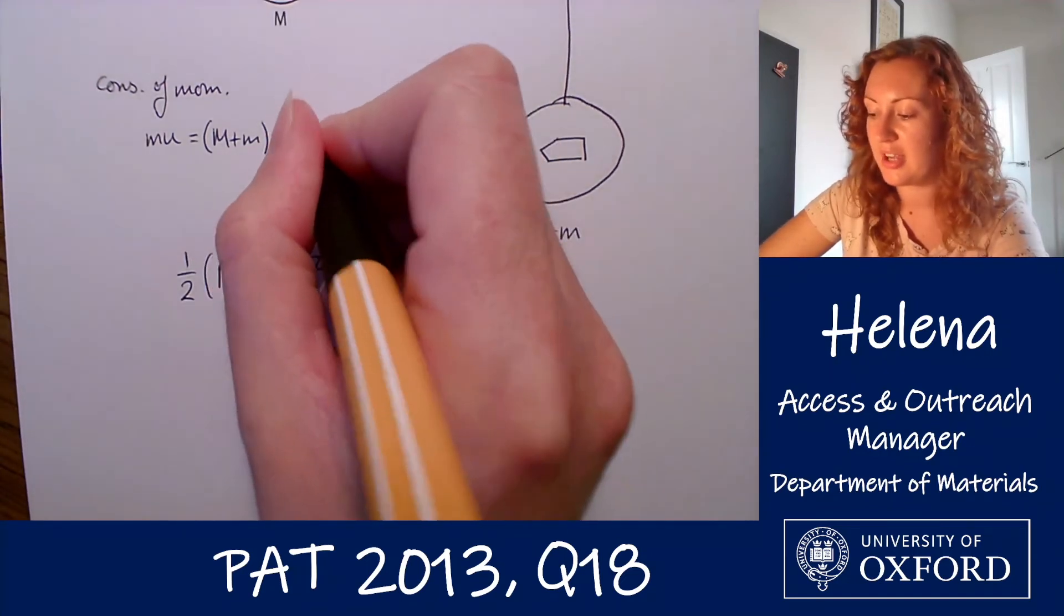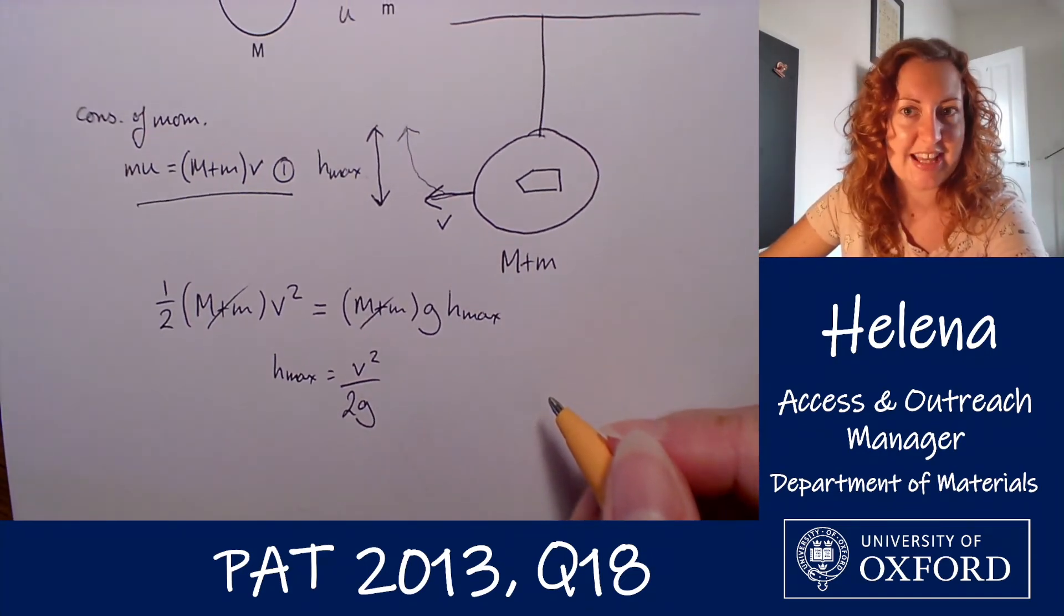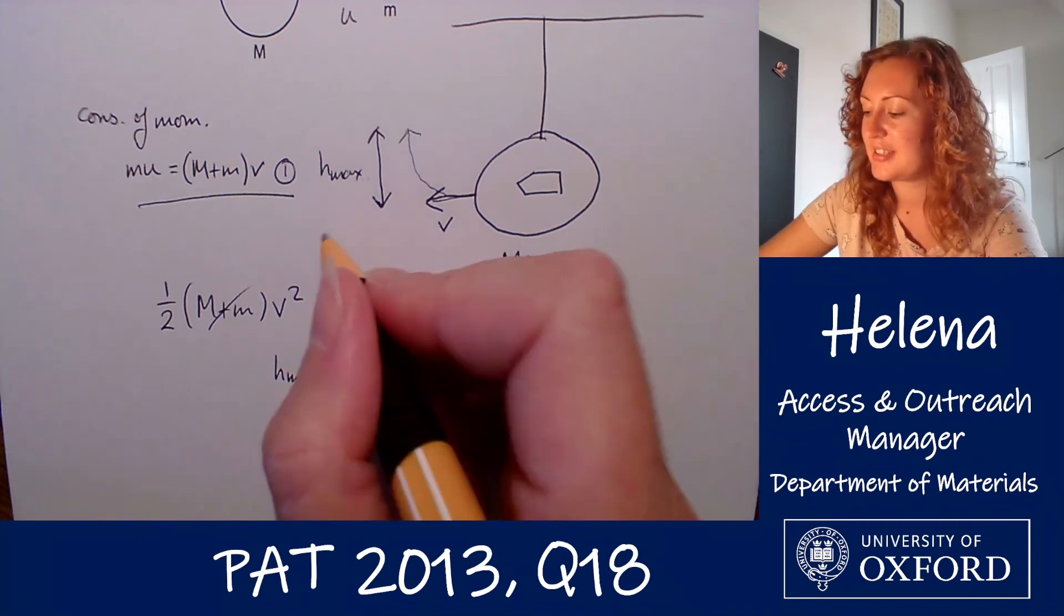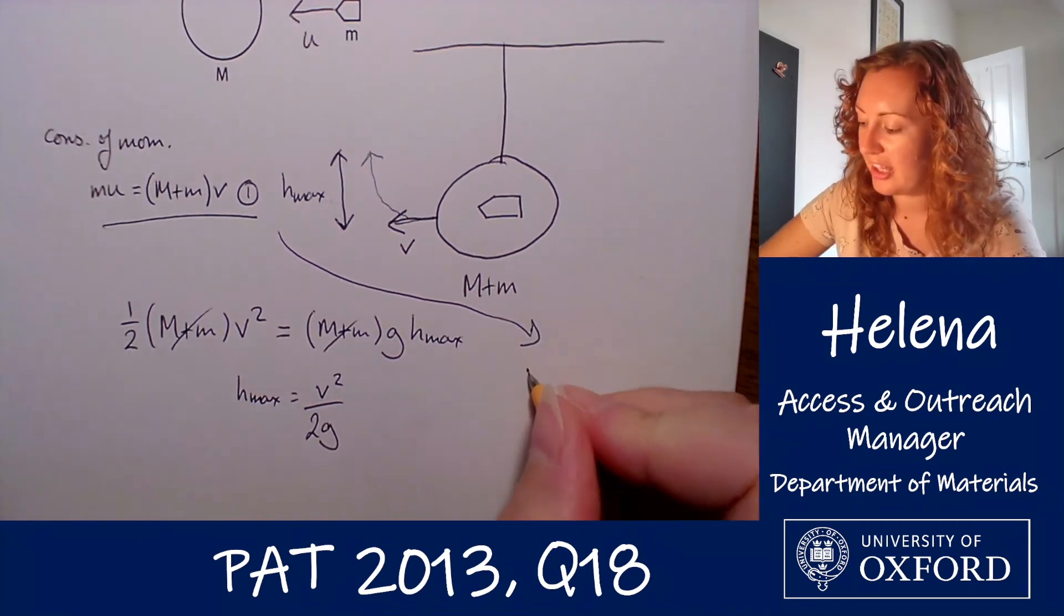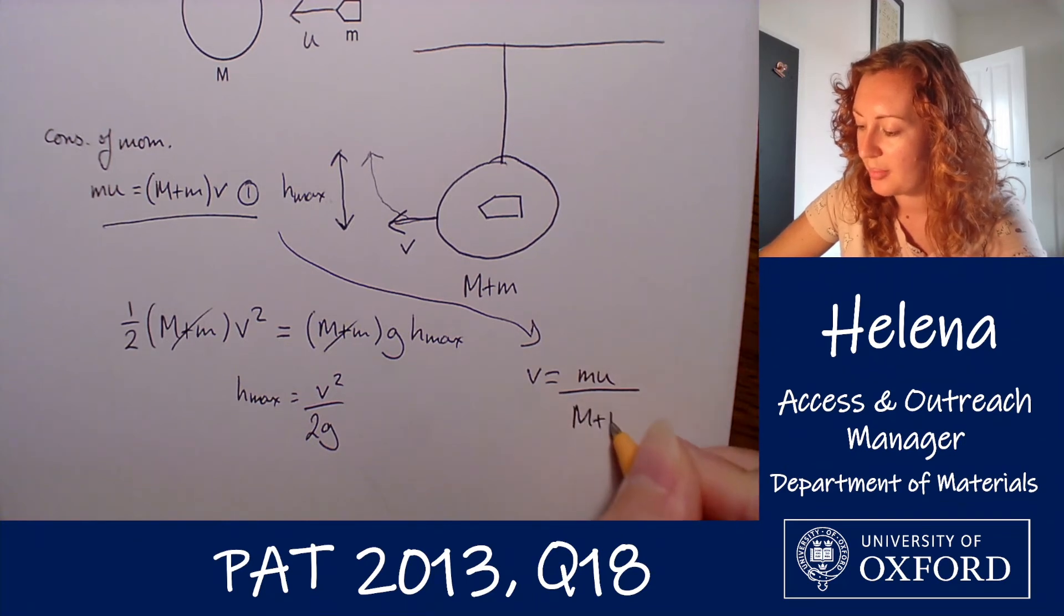However, we do have our brilliant little conservation momentum equation up here which does have a value for v in it. So if we rearrange that for v, we find that v equals little m times u over big M plus little m.